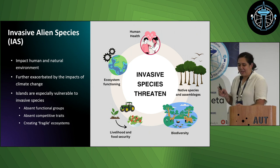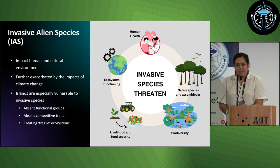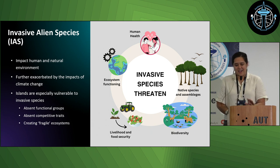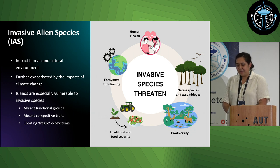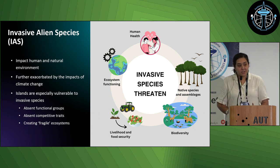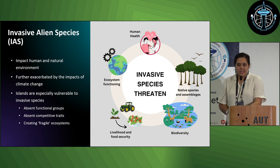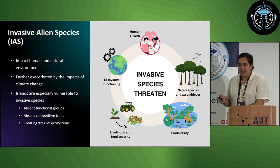This is an example of their impacts. They impact the human and natural environment, out-competing native biodiversity. We believe they're further spread by the impacts of climate change and cyclones, which are a threat to the Pacific. Islands are especially vulnerable to invasive species — we have absent functional groups, absent competitive traits, and they create fragile ecosystems, so native biodiversity is easily out-competed because it lacks the traits to battle these invasives.